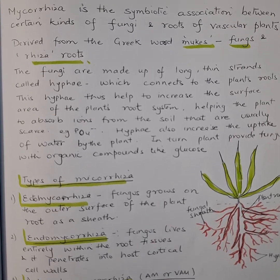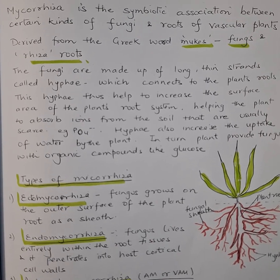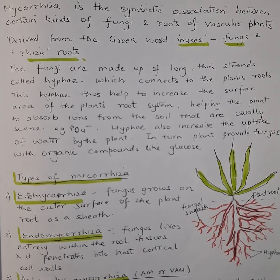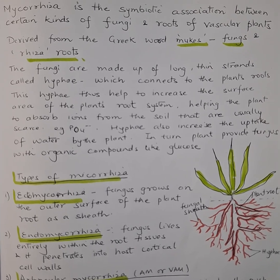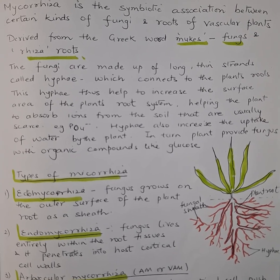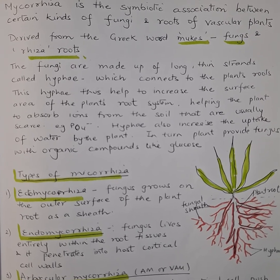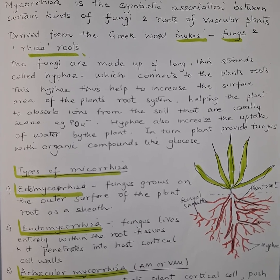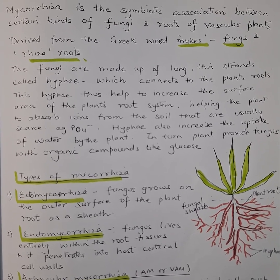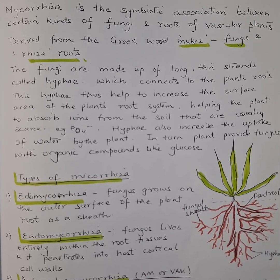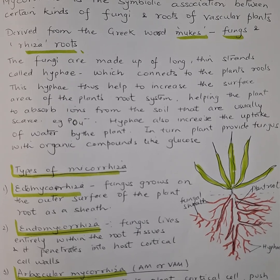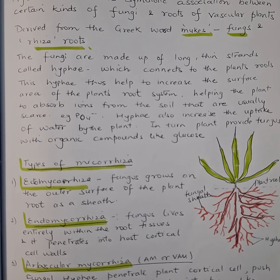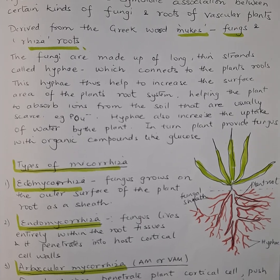In this video we are going to discuss mycorrhiza and their different types. Mycorrhiza is the symbiotic association between certain kinds of fungi and the roots of vascular plants. In this association, both will be benefited. It is derived from the Greek word 'mycs' meaning fungus and 'rhiza' meaning roots.